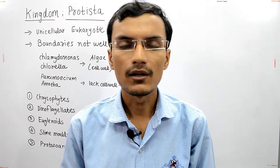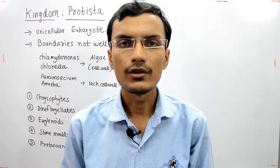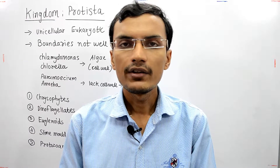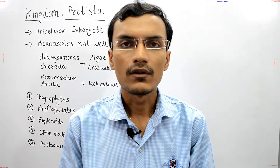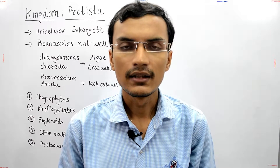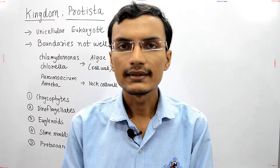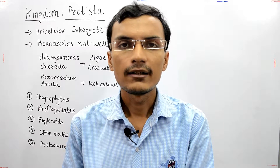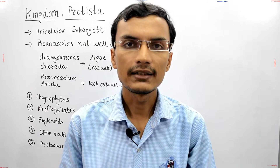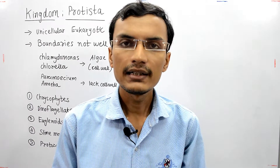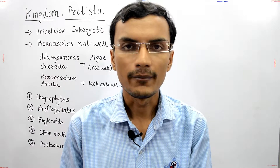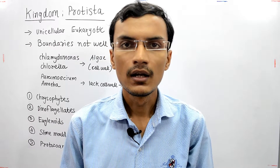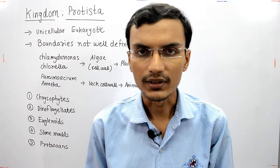Hello friends, welcome to Sandeep's biology. In this video I will be talking about Kingdom Protista. In five kingdom classification, which was proposed by R.H. Whittaker, the five kingdoms consist of Monera, Protista, Fungi, Plantae, and Animalia. I already discussed Kingdom Monera — if you want to watch that video, the link is present in the i button. Let us see about Kingdom Protista in this video.